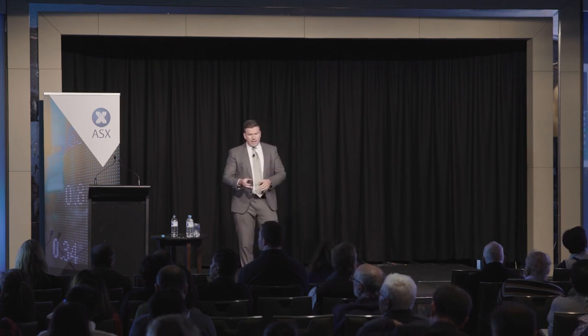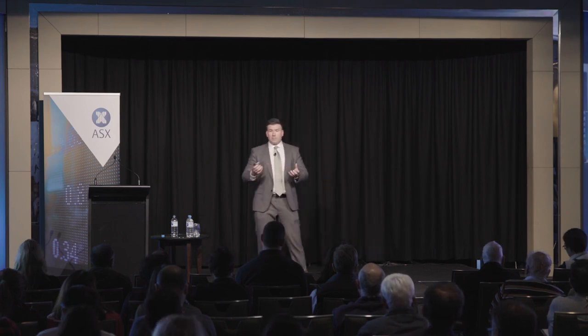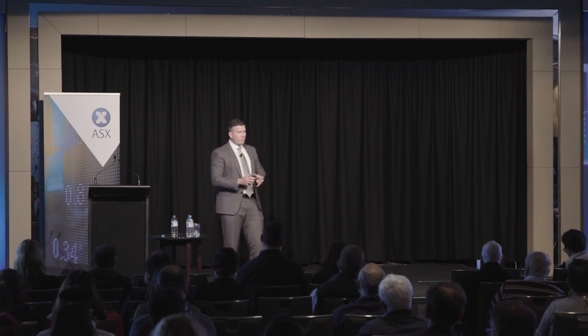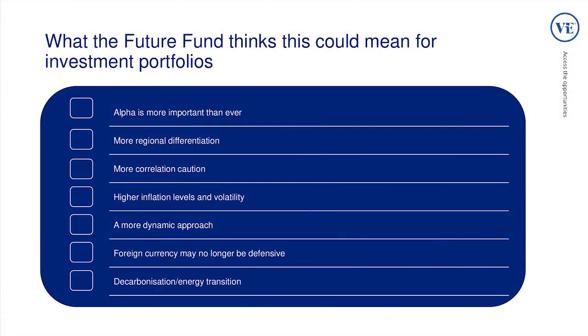I just mentioned the Yale model. The Future Fund — Australia's own sovereign wealth fund — released a paper in December last year, which is actually well worth a read. It really talks about the same stuff, about their outlook for traditional beta — traditional markets not being particularly strong anymore and needing to look outside of that. Our argument is that with the rise of ETFs and the democratisation of investment markets, individual investors can actually access similar things to what institutional investors are doing.